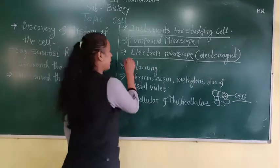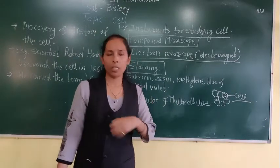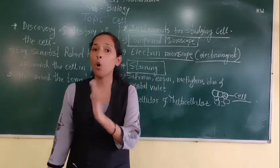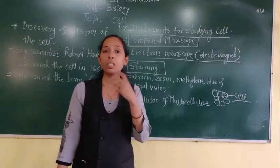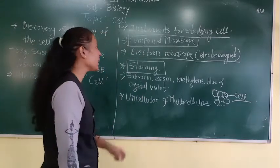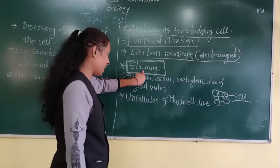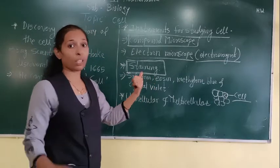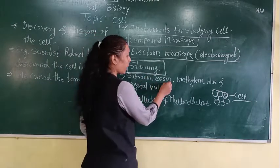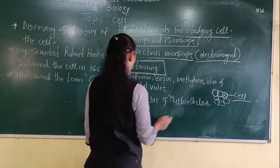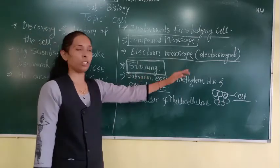The next point is staining. Cells are colorless substances present in the human body or in living things. So if you want to observe the cell, we have to give certain colors to it. We use certain chemicals to give color to the cell, and that process is called staining. Stains like safranin, eosin, methylene blue, and crystal violet are the chemicals we use to do the staining process for the cell.